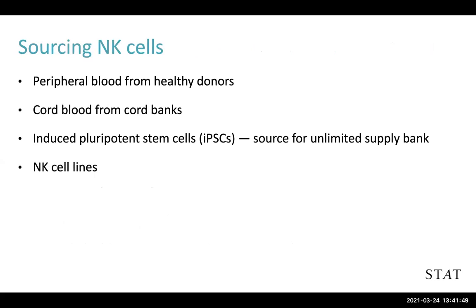Where do we get NK cells? There are four main sources. First, NK cells from the peripheral blood of healthy donors — donors go into a facility and have blood drawn, and NK cells can be extracted and harvested. Second, cord blood from cord banks. Third, induced pluripotent stem cells — iPSCs — which are precursor cells that can be manipulated and grown into any other kind of cell. Companies have taken these stem cells and turned them into NK cells, creating an essentially unlimited supply. And fourth, specific NK cell lines that can also be grown.